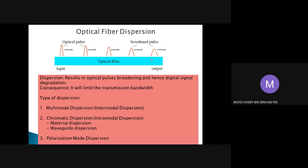This broadening or widening process of the pulses is called dispersion. We can compare this dispersion effect with the attenuation effect learned in Lecture 5. Attenuation is about the reduction of the signal level - the amplitude of the signal. But dispersion is about the widening of the pulses. Dispersion means a broadening or widening process of your optical pulses as they propagate along the optical fiber.